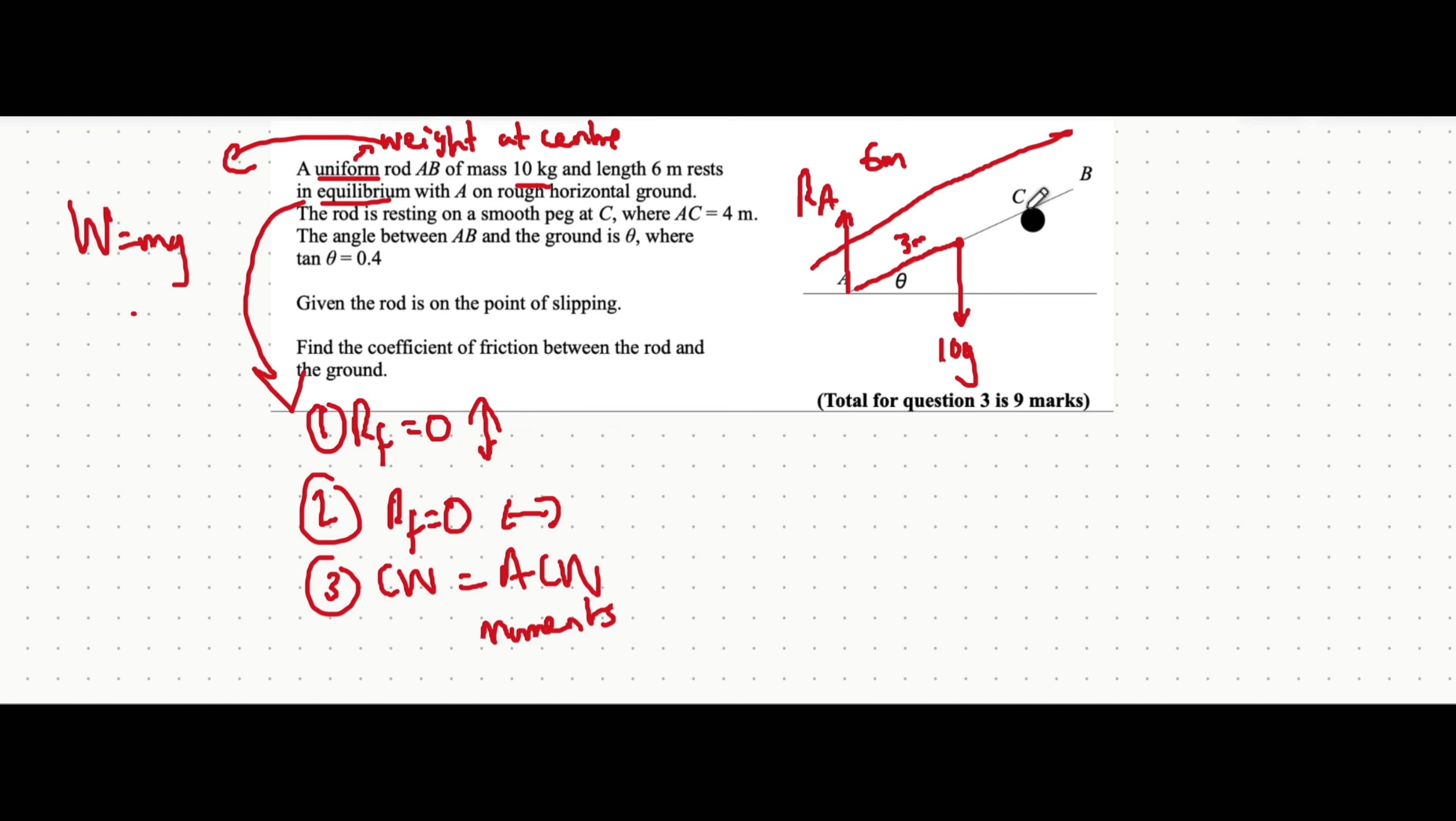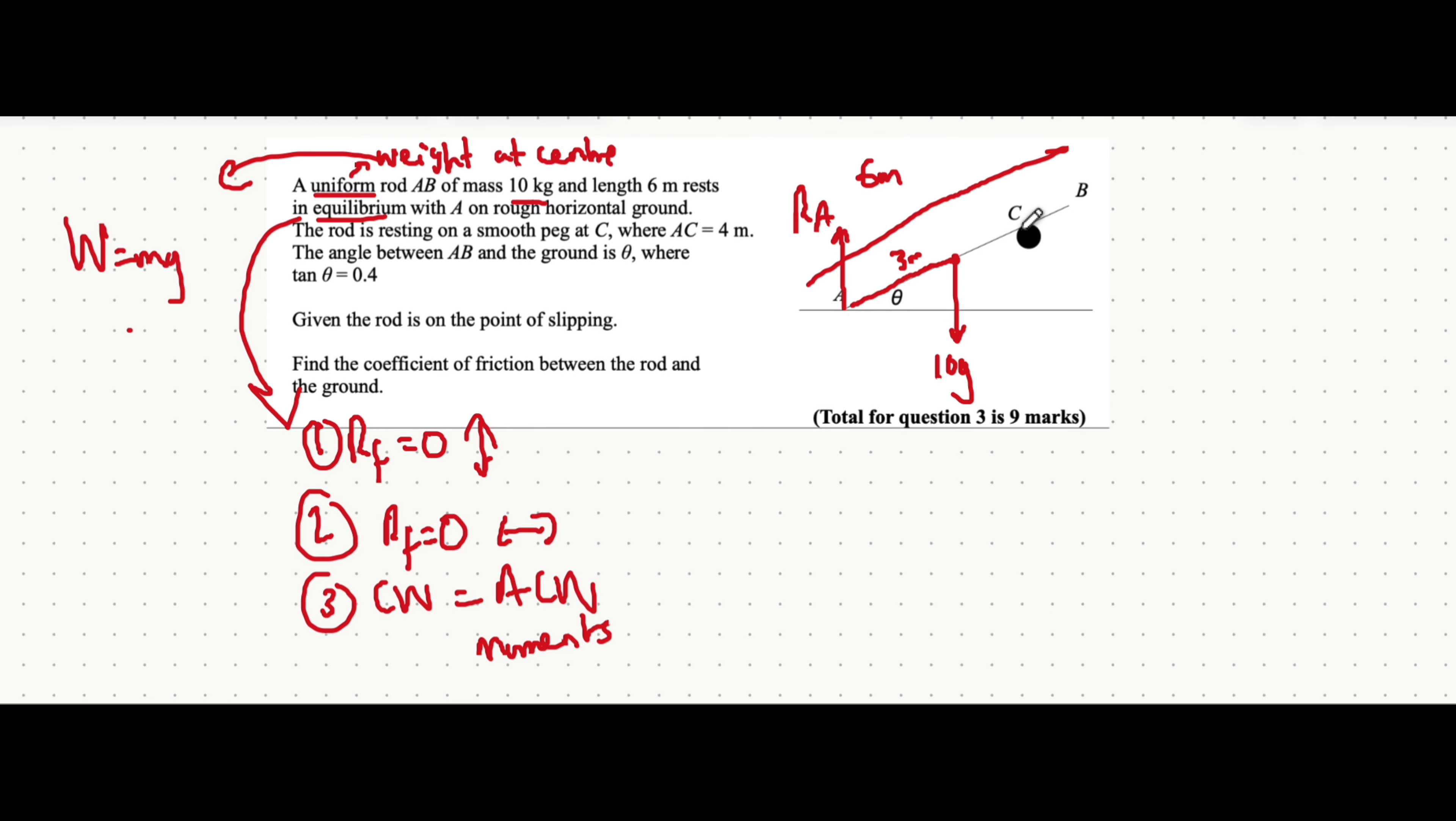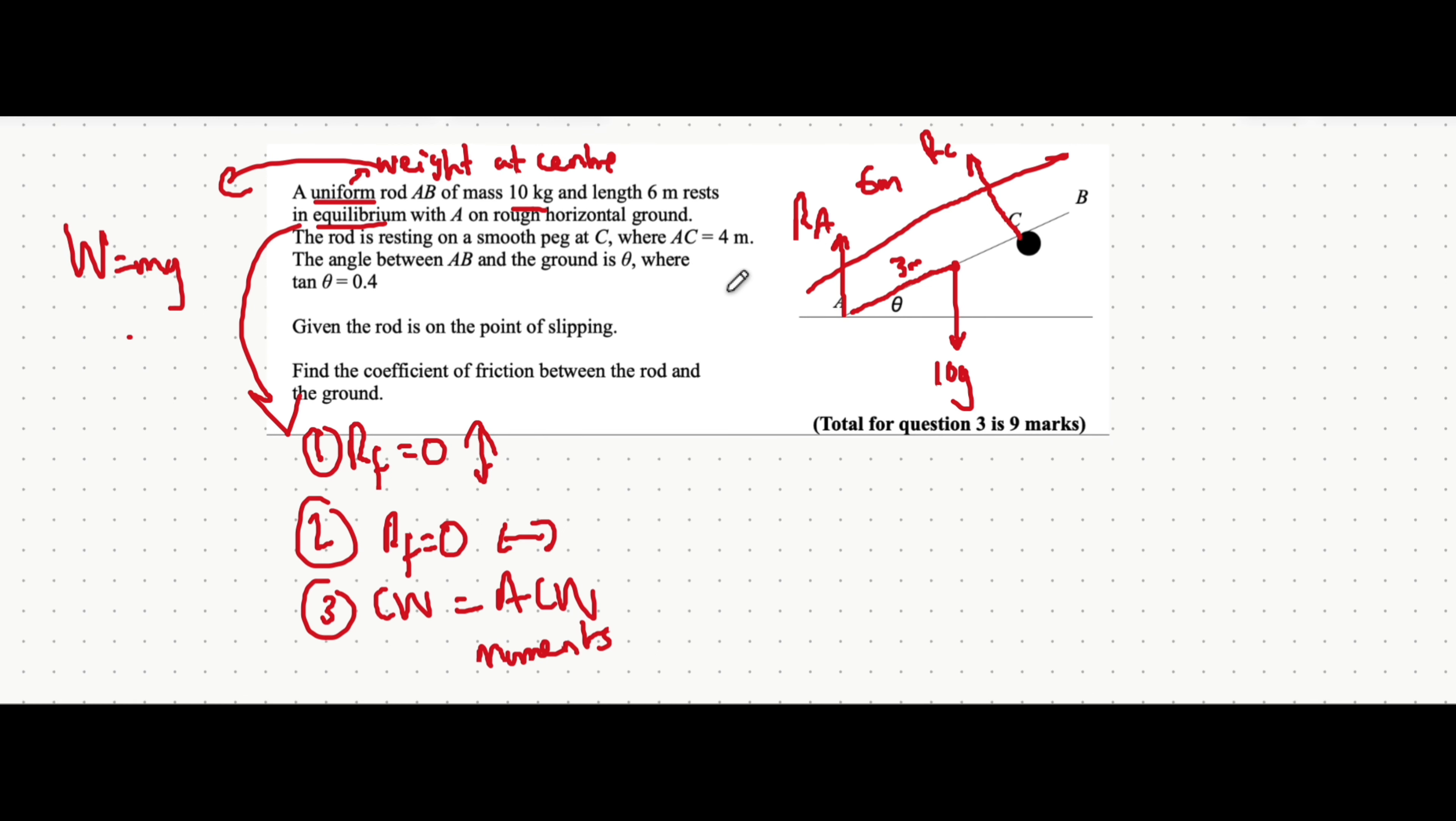Because there's contact between the rod and C, there's going to be a reaction force at C. Let's call that R_C, just to separate it from the reaction force at A. It also tells you AC is four meters long. This distance AC is four meters. It tells you the angle between AB is theta where tan of theta is 0.4.